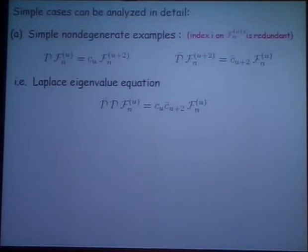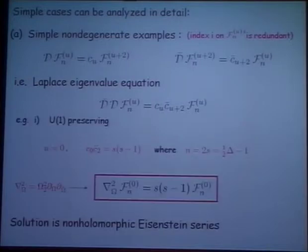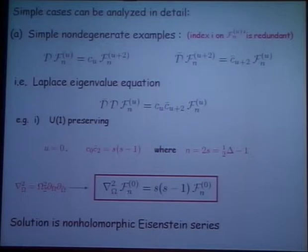And there are no quadratic or cubic or whatever source terms — the equation is simply linear in F. Then you get a Poisson eigenvalue equation by acting with D-bar. And examples of that are known where, for example, when U is zero, this operator is then simply the Laplacian acting on F equal to some eigenvalue times F. And this is an equation whose solution is an Eisenstein series.